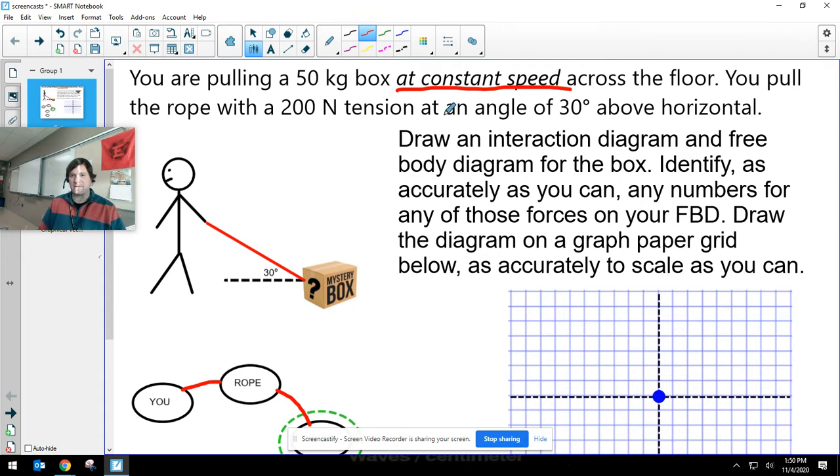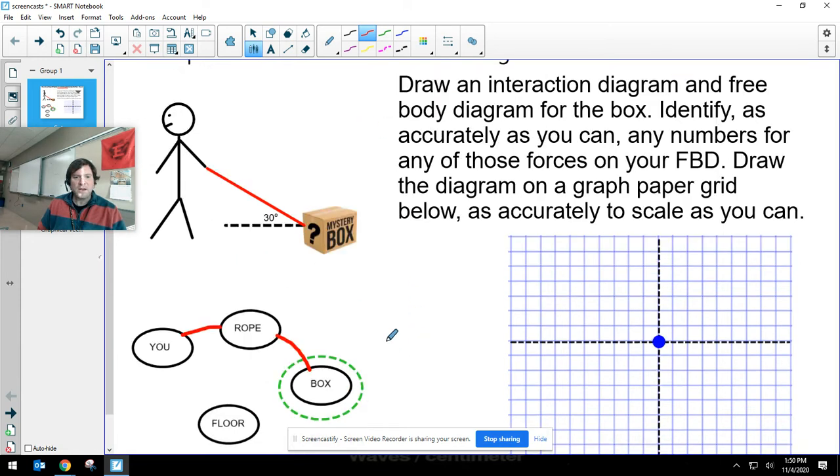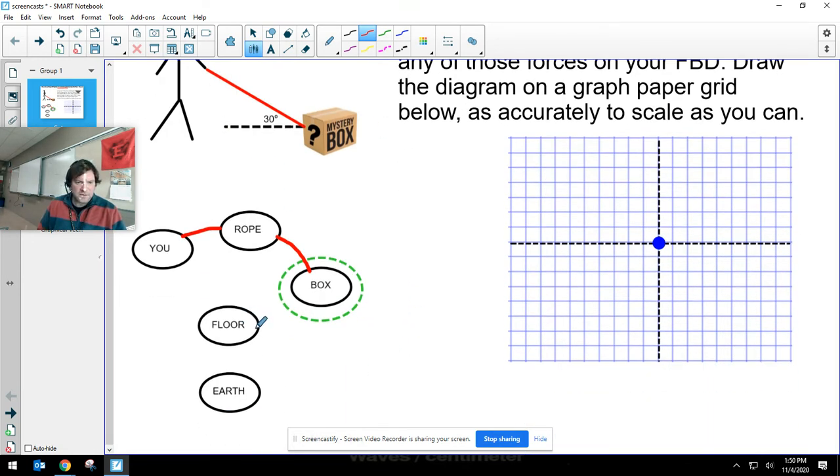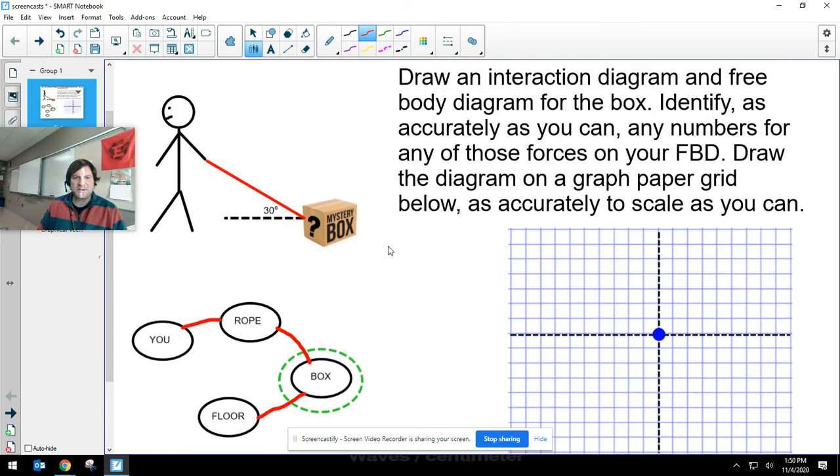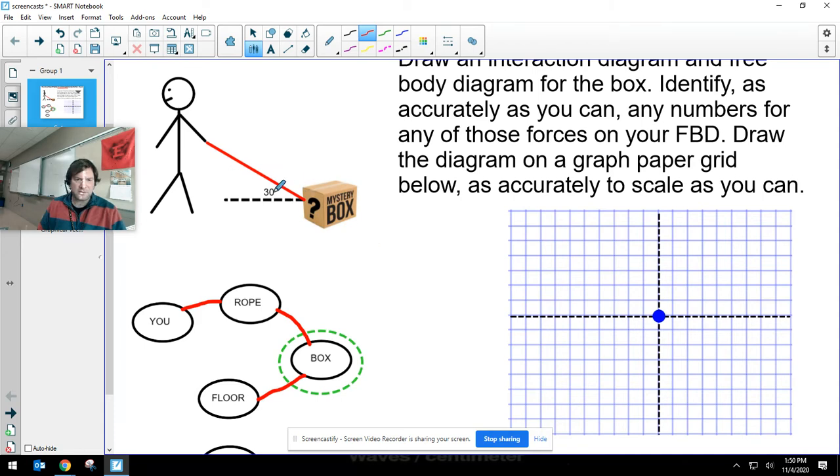Rereading this situation, I'm pulling a box at a constant speed across the floor. Oh, at a constant speed, that's going to mean that my forces have to be balanced. I pull the rope with a 200 Newton tension. So there is a normal force from the floor on the box.